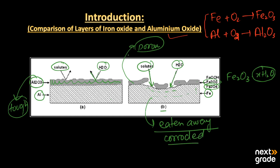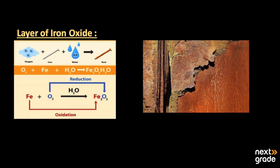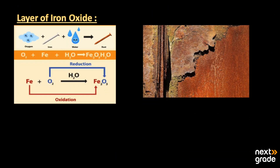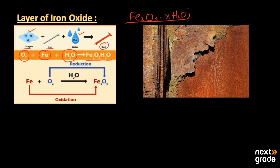Both layers and their formation are different because one is durable and the other is not. Looking at the iron oxide layer in detail: iron reacts with oxygen in the presence of water molecules, forming a layer Fe2O3·H2O. Here we have oxygen present in the air, an iron nail, and water molecules. When they react, rusting of the nail starts. This process is known as rust formation, and the formula for rust is Fe2O3·H2O.